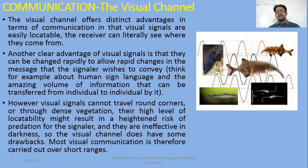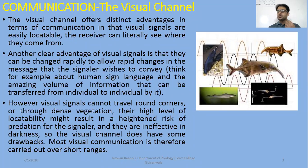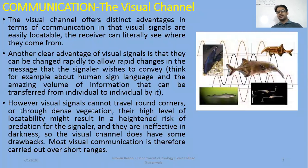If we talk about the visual channels, we have discussed animals in the daytime or in the night time which are developed in their vision. In the night time they have more rod cells and they have good vision, in the case of nocturnal animals. Communication which is limited to vision transfers a lot of information in the form of signals at the same time. The clear advantage here is that signals can be changed rapidly, to allow rapid changes in the message that the signaler wishes to convey. When you bring a change in the communication signal, it will also be perceived as rapid transmission.